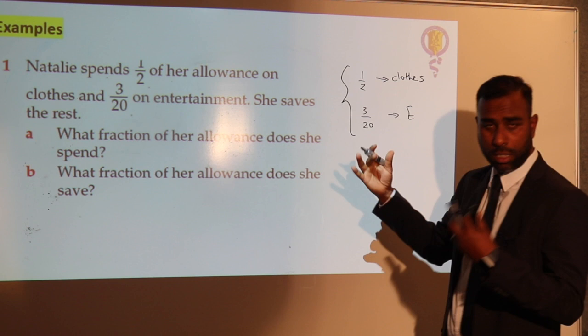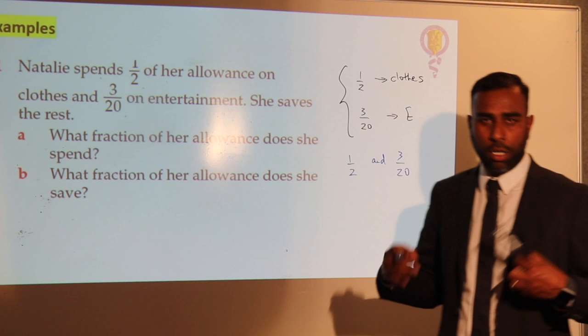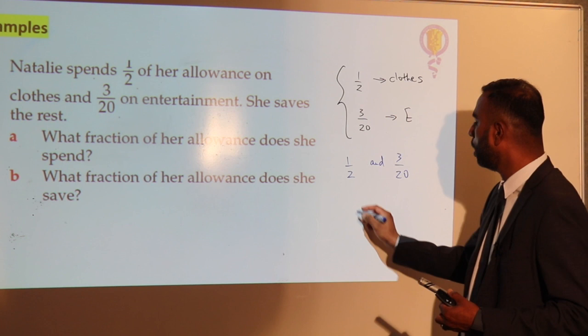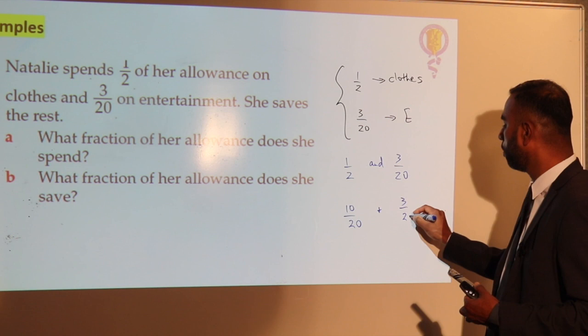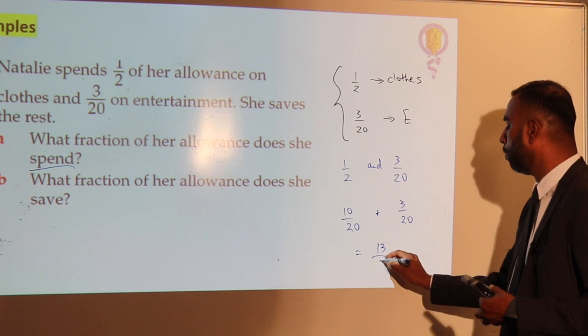Let's look at what's common between one half and 3 twentieths — two fractions with different denominators. My first job is to bring it down to a common denominator. Between 2 and 20, the lowest common denominator would be 20. So one half becomes 10 over 20, and 3 twentieths stays as 3 over 20. How much does she spend on clothes and entertainment? That makes it 13 over 20. That's the total expense.